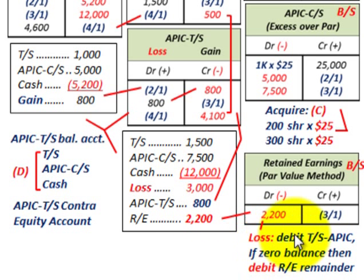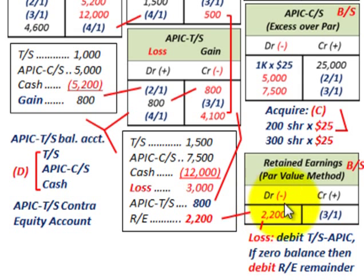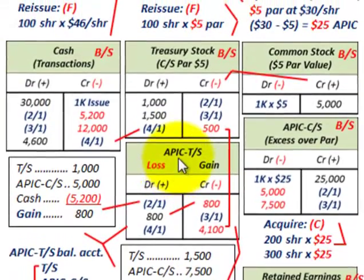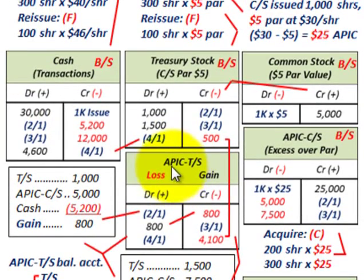We reduce our retained earnings by $2,200 — the difference between the total $3,000 loss and the $800 debited to additional paid-in capital. On a loss, you debit additional paid-in capital, and if it has a zero balance, you debit the remainder to retained earnings — same as with the cost method. It's only how we got to this point that differs in determining additional paid-in capital.